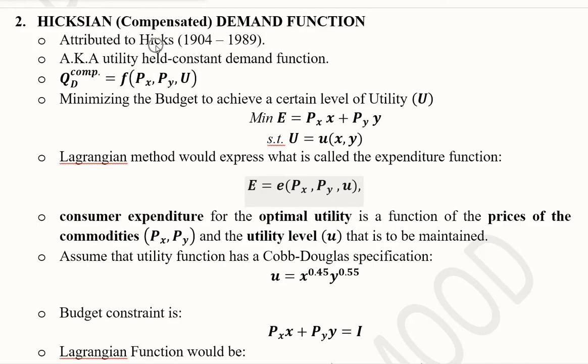It is attributed to Hicks (1904-1989). It is also known as the utility held constant demand function, because in this demand function we keep the utility constant while the prices of X and Y, the two or more goods, are also involved in determining the level of demand.